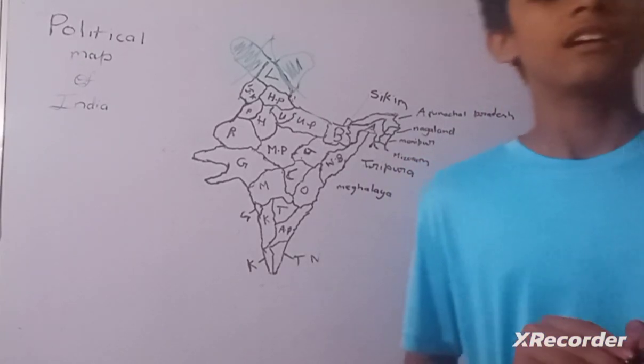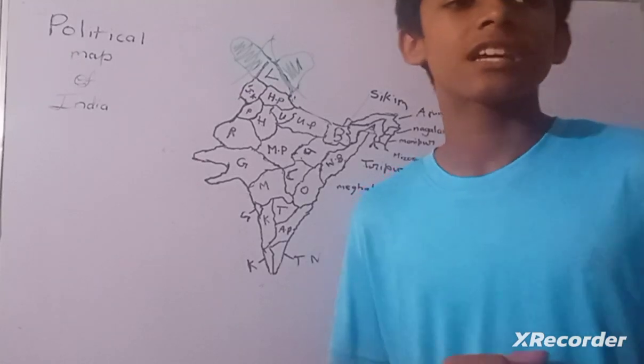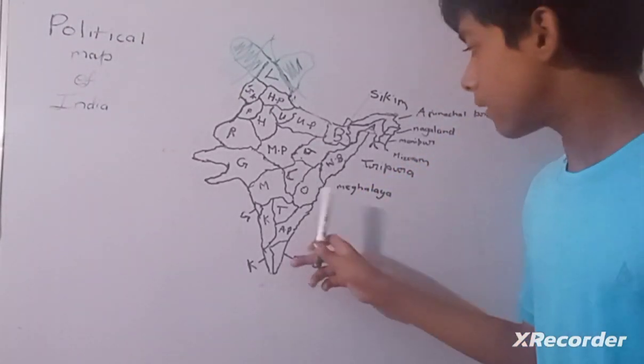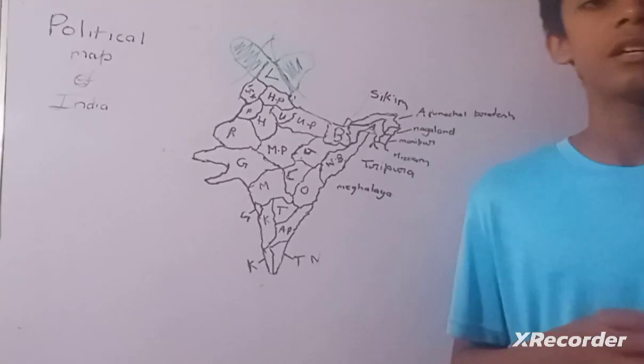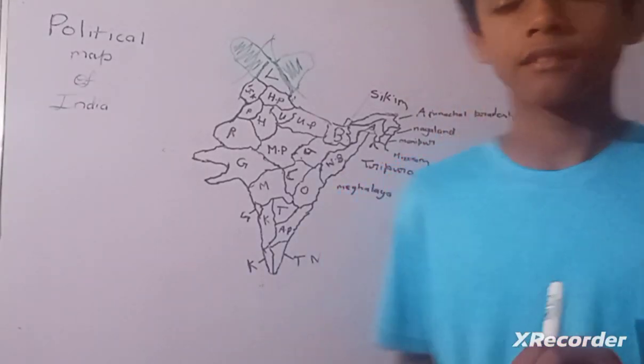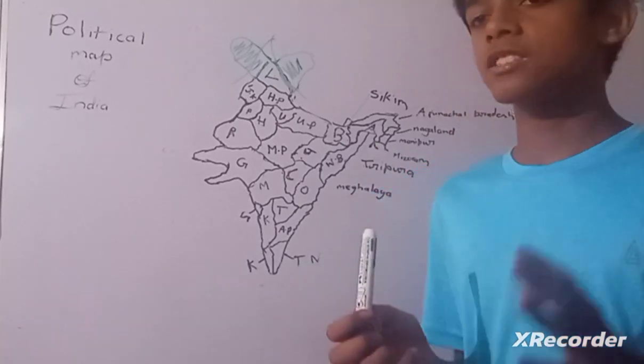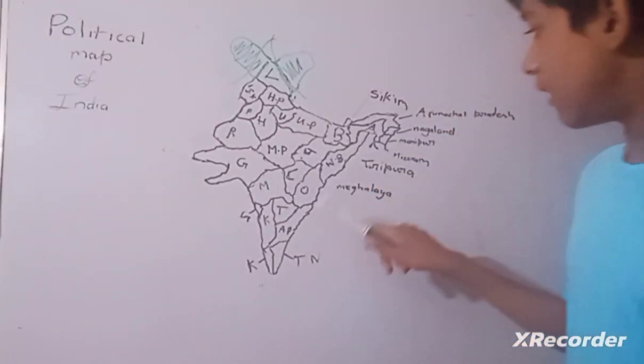Now we will talk about Goa. Goa is famous for beaches, seafood, and its capital is Panaji. Then Telangana. Famous for handicrafts, Charminar. Capital is Hyderabad.